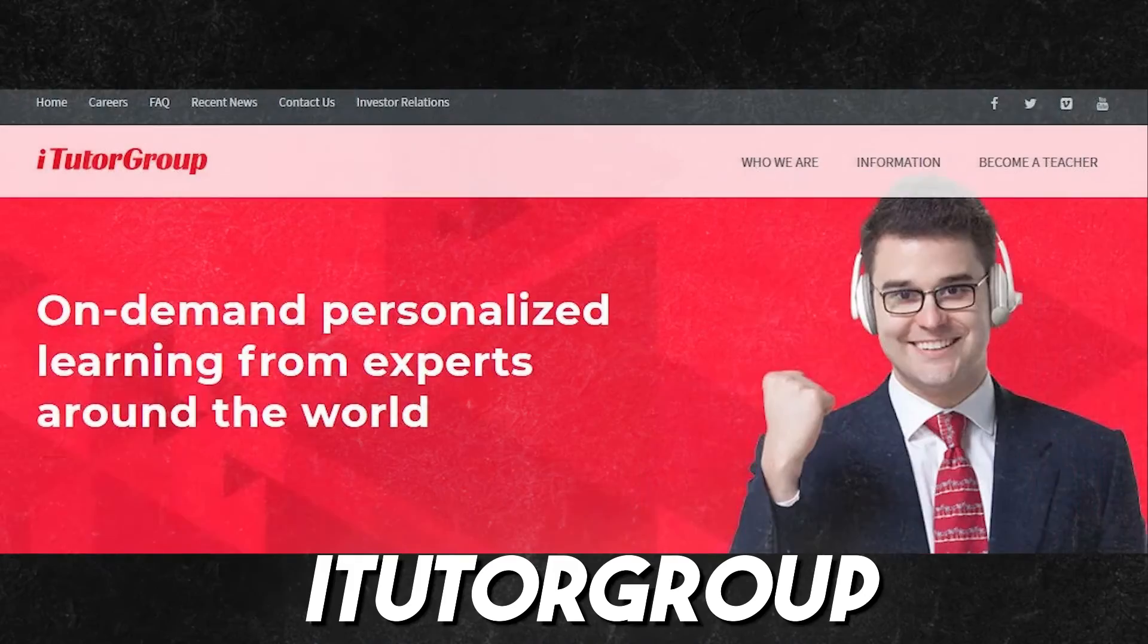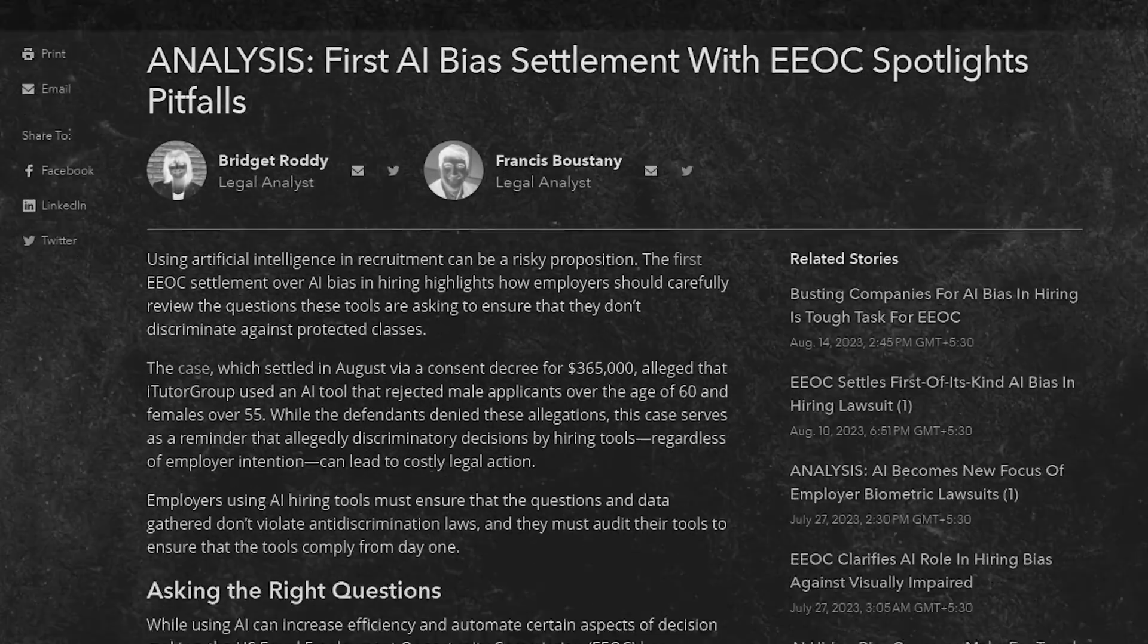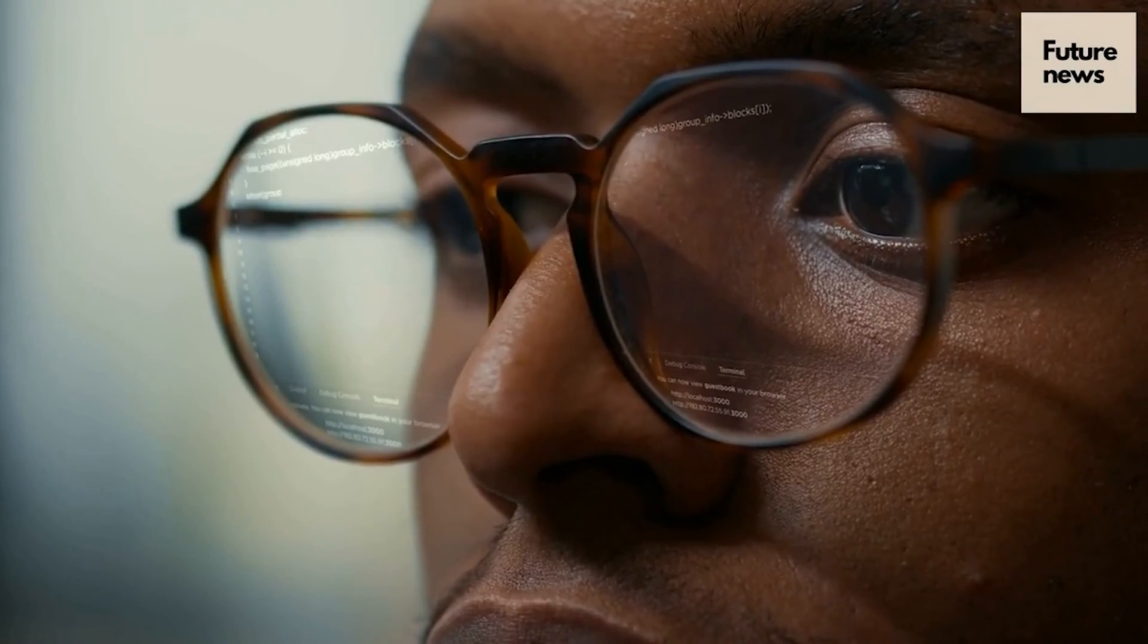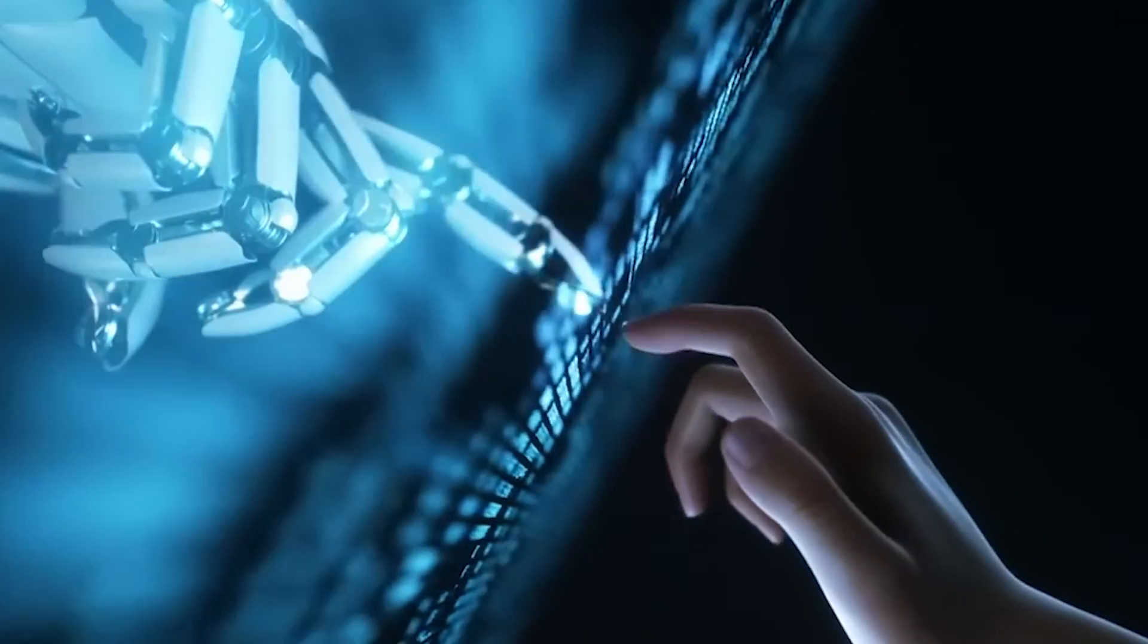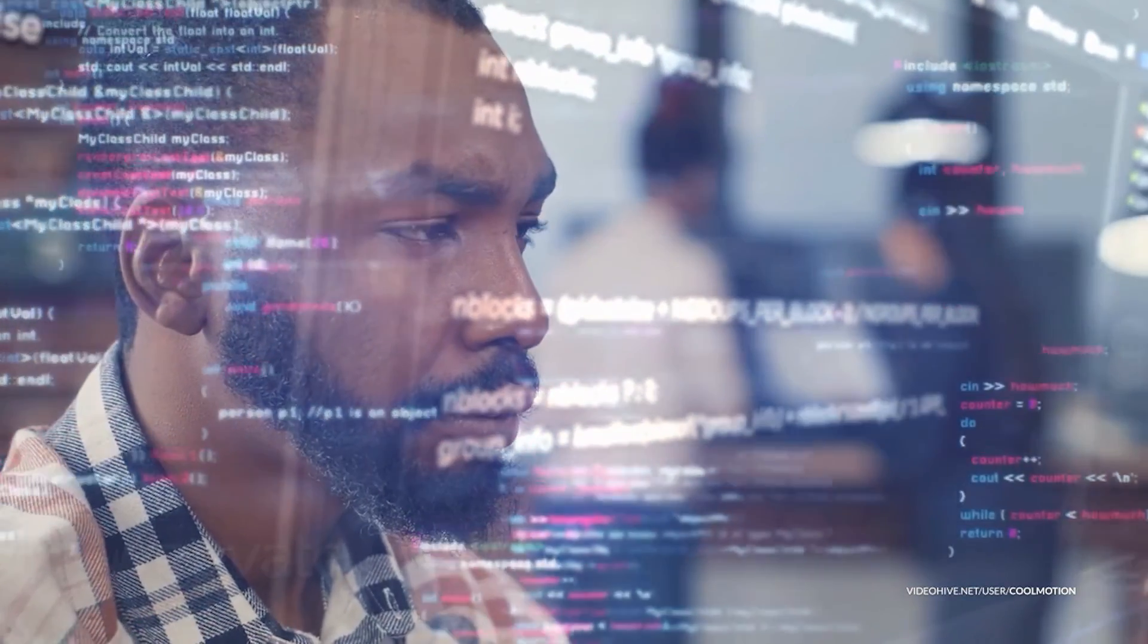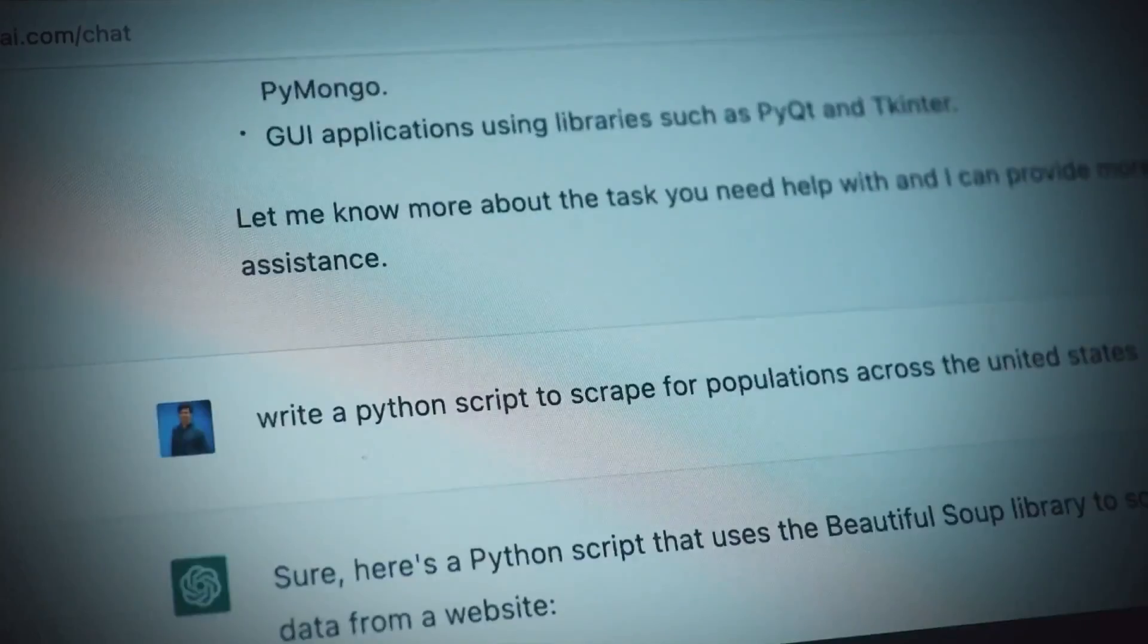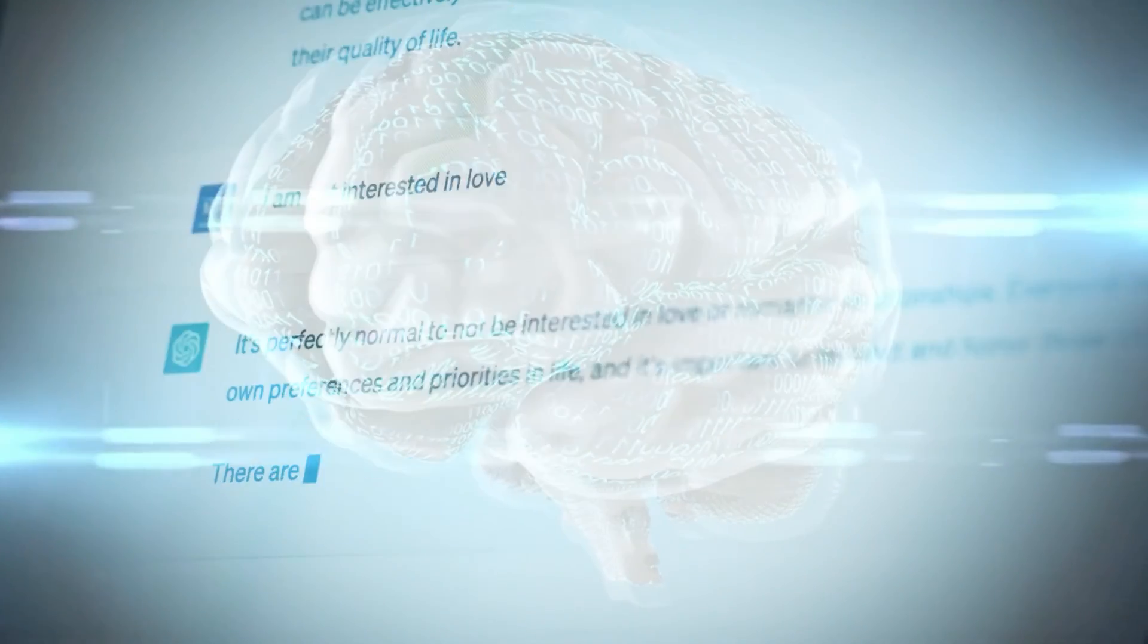In another instance, iTutor Group, an educational company, encountered legal issues for using AI that discriminated against older job applicants. This case underscores AI's potential to embed and amplify biases. Moreover, advancements in AI language models, such as ChatGPT, have been both lauded for their potential and scrutinized for accuracy issues in sensitive areas like legal research.